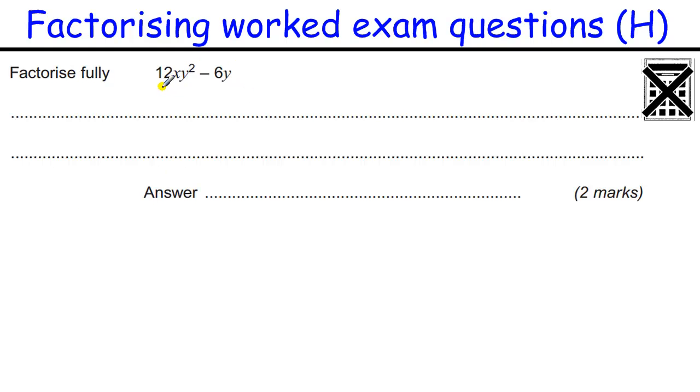OK. Here we've got a question with lots of different factors going on here. We've got numbers and we've got letters. So let's do the numbers first. What goes into 12 and 6? Well, 6 does. Our brackets are going to be just a single bracket. And what letters go into both of these? Well, there's no x in both, but there is a y in both, so y goes into both. What I times 6y to get 12xy squared? Well, that's times 6 by 2 to get 12. I need to times by an x to get an x in there. And I need to times by y to get y squared. And what I times 6y to get 6y? Well, that's just 1.